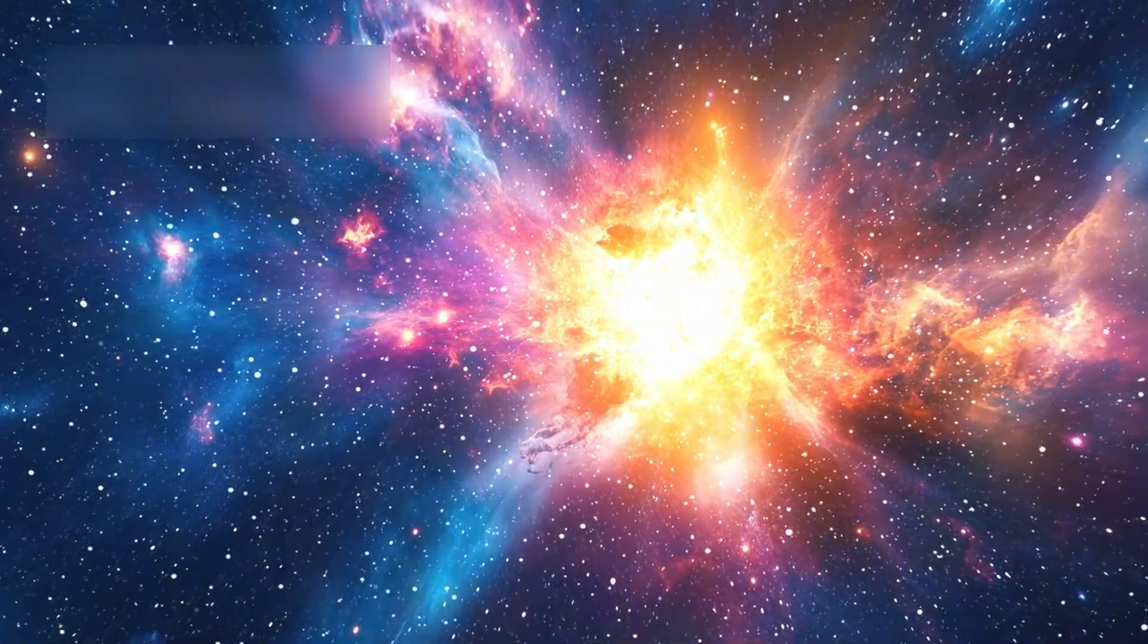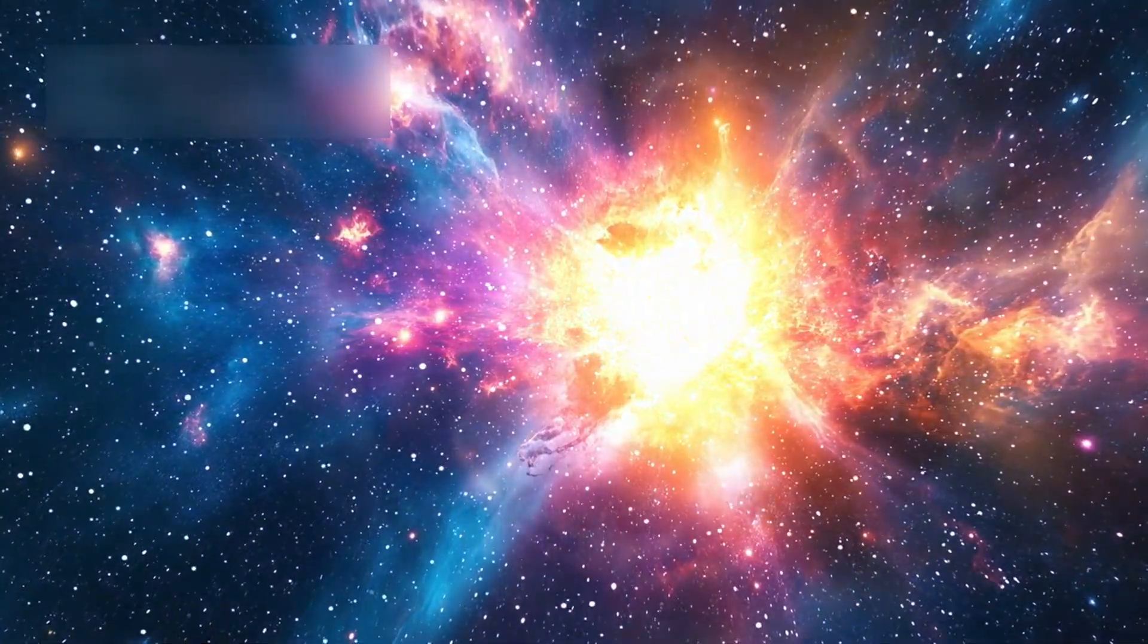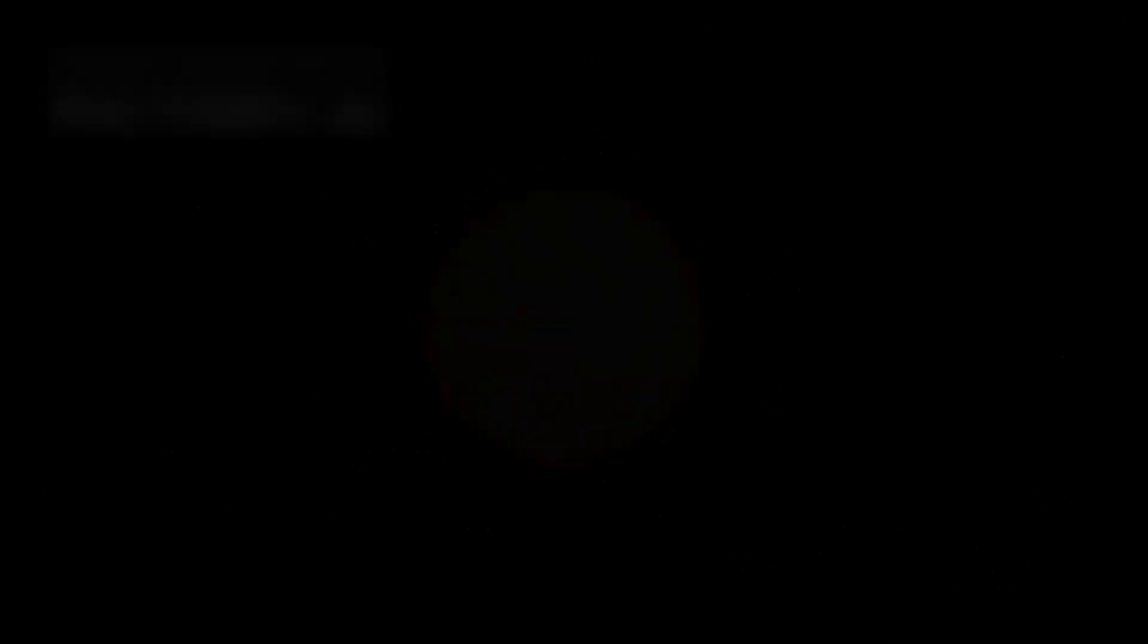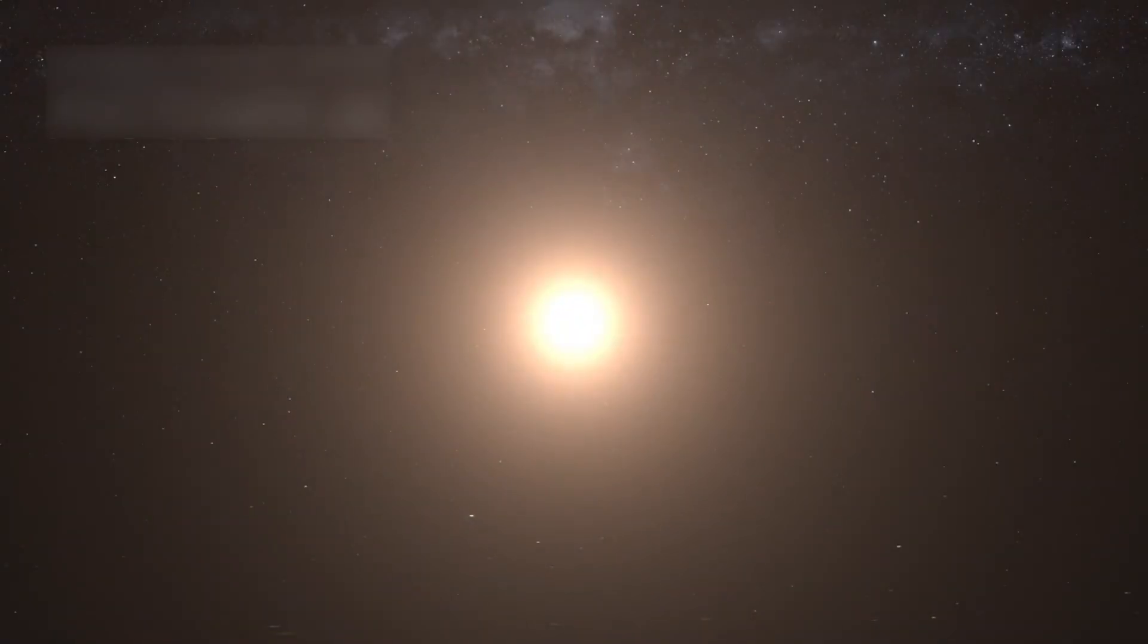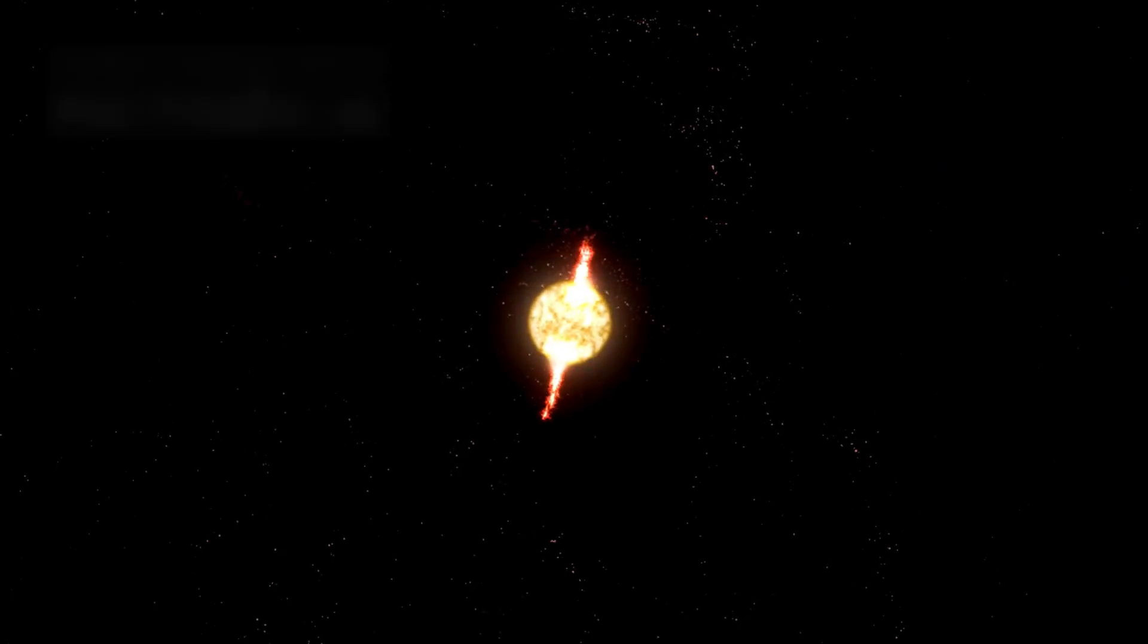When massive stars explode in supernovae, they scatter heavy elements across space. A Type II supernova releases more energy than the Sun will in its lifetime. Elements like gold and uranium are formed in these blasts and recycled into planets. Their remains form neutron stars or black holes, powerful relics of stellar death.